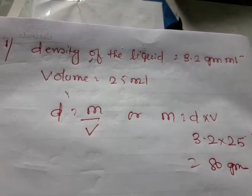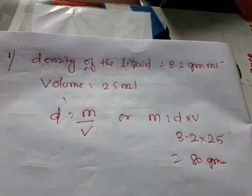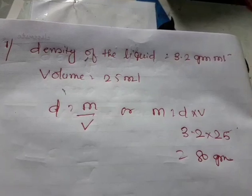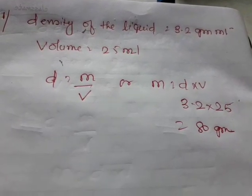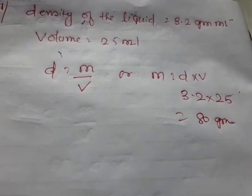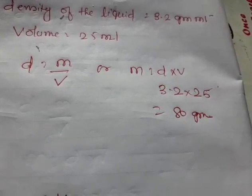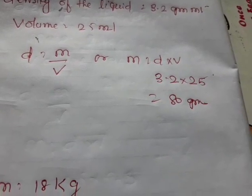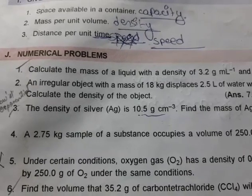Students, now we will do the numericals. Number 1: the density of the liquid has been given, that is 3.2 grams per liter, and volume is equal to 25 ml. As you can see on the screen, density is equal to mass by volume, or mass is equal to D into V. So density is 3.2, volume is 25. Multiply to get the answer of 80 grams.